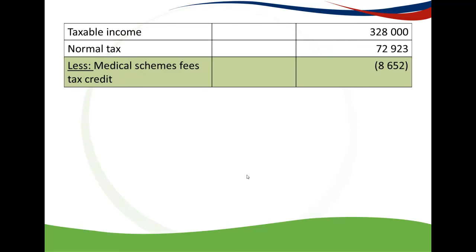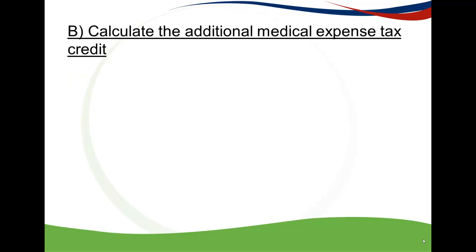Remember, this credit is deducted as a rebate. So in your tax framework, you first calculate taxable income, then normal tax, and then deduct the Medical Schemes Fees Tax Credit as a rebate. In a normal scenario, you'd also first deduct your age rebates from normal tax before this step. The next step is to calculate the Additional Medical Expense Tax Credit.